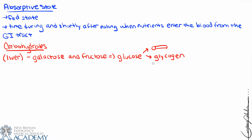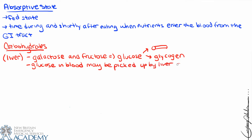Once monosaccharides enter the capillaries from the intestinal mucosa, they travel via the hepatic portal system directly to the liver for processing. In the liver, galactose and fructose are converted to glucose. That glucose can then be released back into the bloodstream for circulation, or if there's already plenty of glucose and no need, it can be converted to glycogen and stored for later.